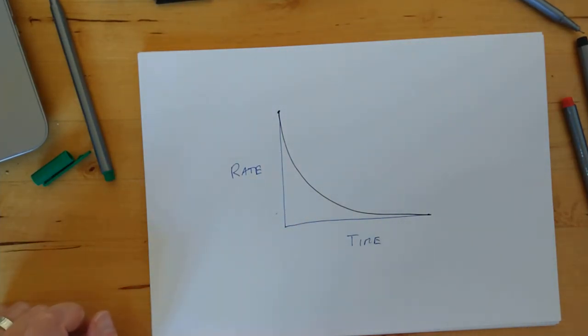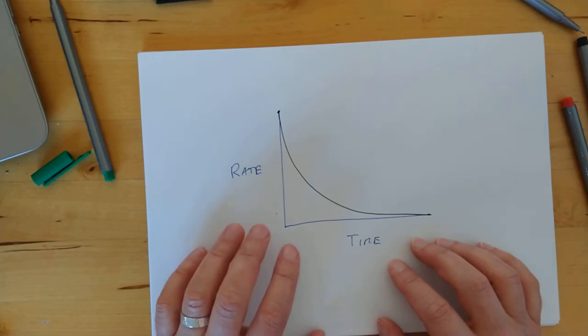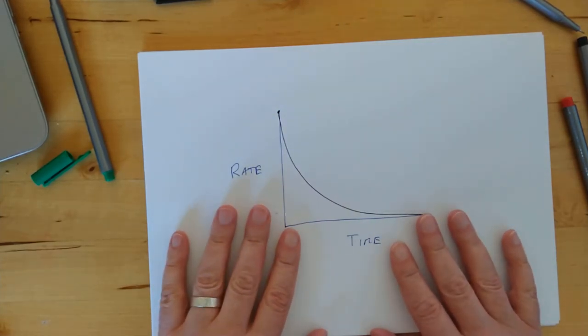And I think I'm going to stop the video there, because we have covered relative rates, we've covered the graphs of how the rate changes with temperature, how the rate changes with concentration, and last of all, how the rate falls off over time. In the next video, we're going to tackle why this actually happens. Okay, thanks for listening, bye.